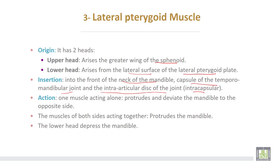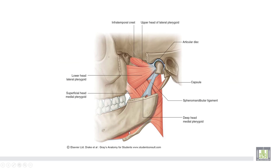The action of the lateral pterygoid muscle: if one muscle acts alone, it protrudes the mandible and deviates it to the opposite side. When both sides act together, they protrude the mandible. Only the lower head shares in the depression of the mandible. The upper head originates from the infratemporal crest of the greater wing of the sphenoid, and the lower head from the lateral surface of the lateral pterygoid plate, inserting into the neck of the mandible, capsule, and intra-articular disc of the temporomandibular joint.